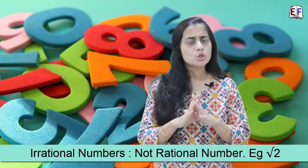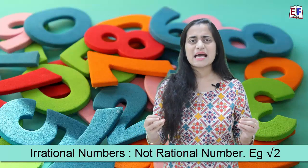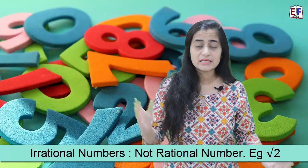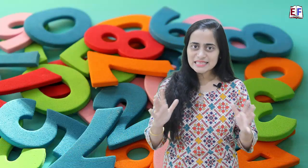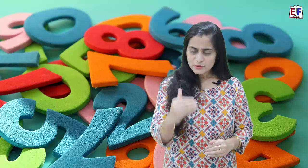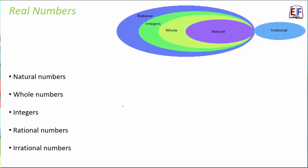The fifth type is a little more complicated — these numbers are not rational numbers. For example, √2, √3, or π — these are all called irrational numbers. In this video, our agenda is to talk about all five different types of numbers in detail on a number line. All five types together are termed real numbers.